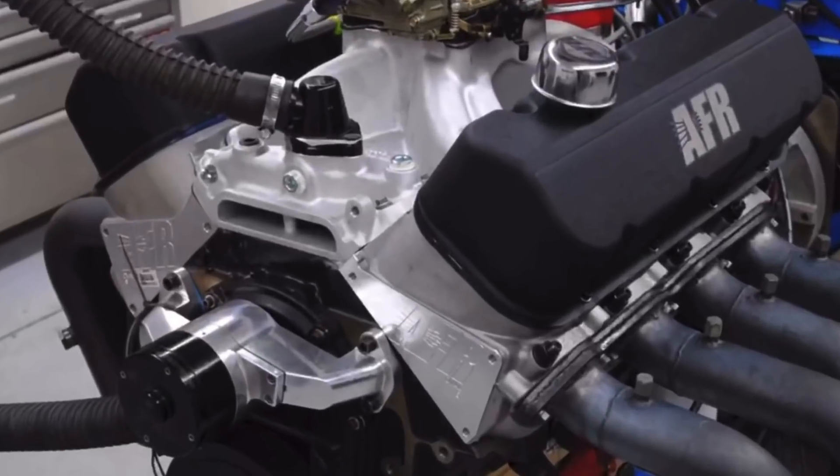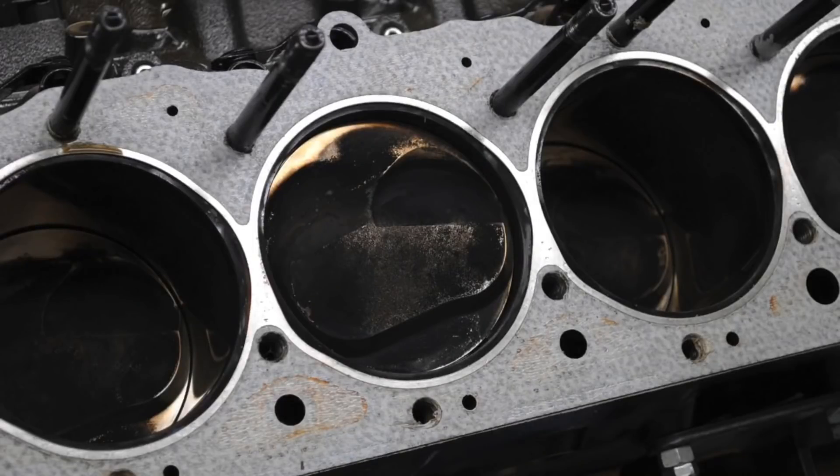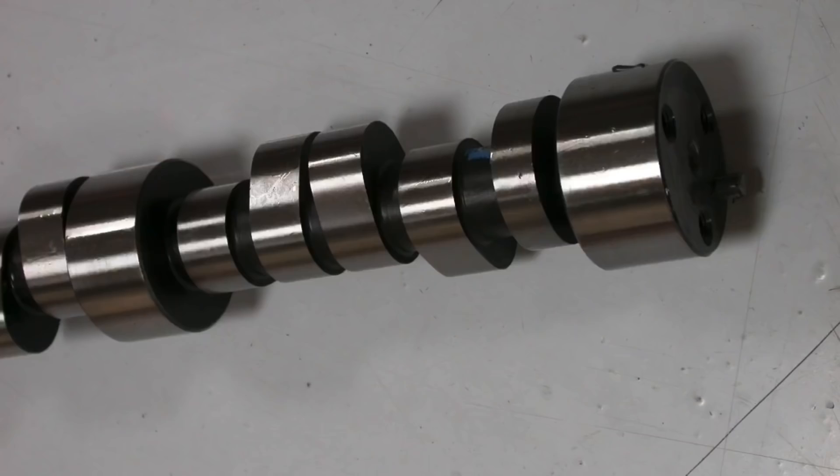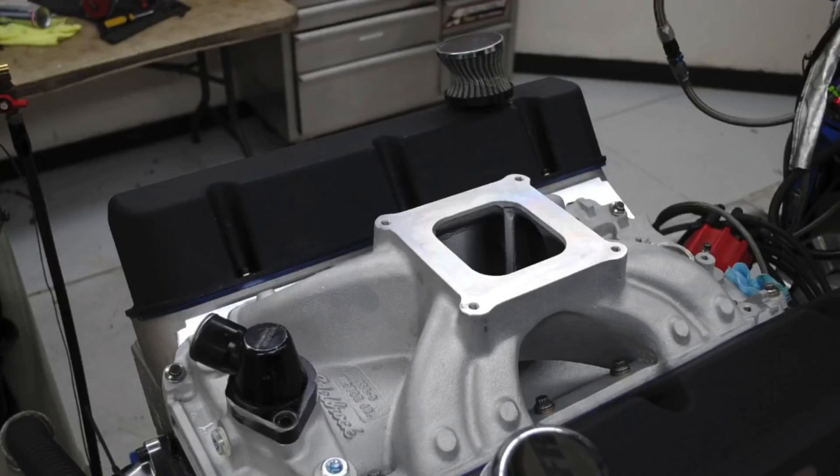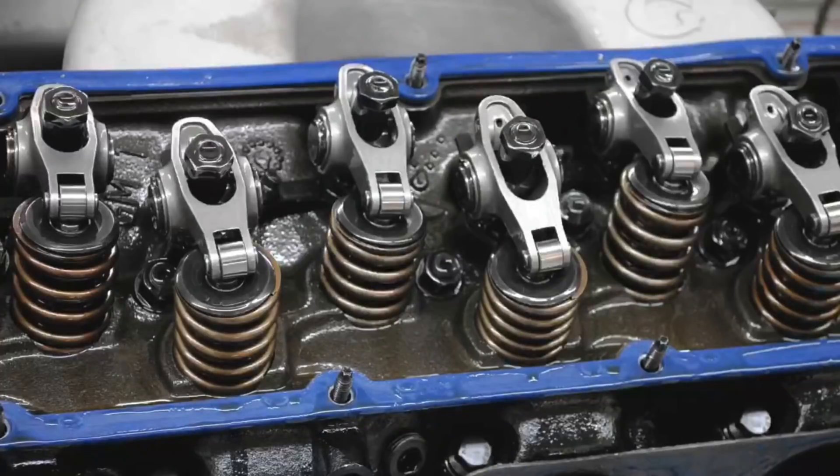In this video we're going to look at a number of tests we ran on a 468 big block Chevy. This was a built 468 with forged internals, good cylinder heads, a good camshaft, a good intake manifold and carburetor. First thing we did was run a test on valve springs. Our cylinder heads were originally equipped with valve springs set up for a flat tappet cam, but we were running a hydraulic roller cam with predictable results.